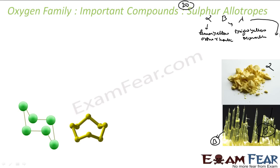The next is lambda sulfur, also called plastic sulfur. Beta sulfur is monoclinic and has a prism-like shape, so it is also called prismatic sulfur.